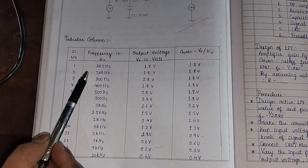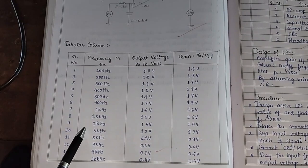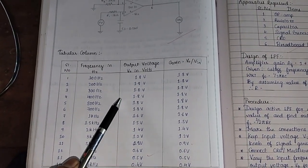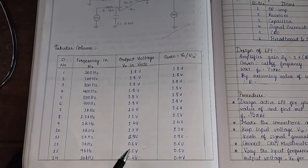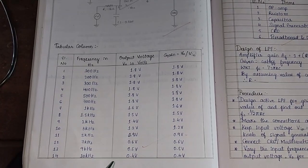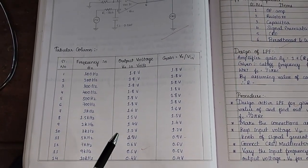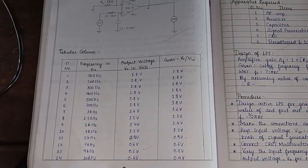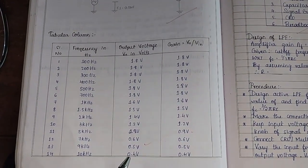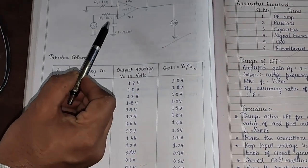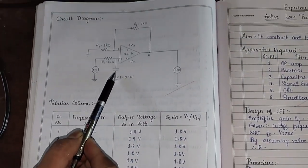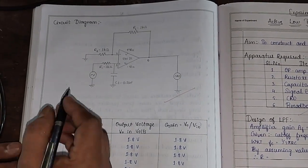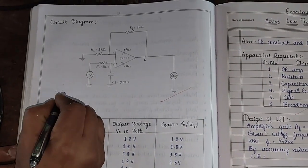By observing these readings we can see that the output voltage goes on reducing. Once we reach the cutoff frequency, the output voltage is almost near to zero volts. This is because we have designed this low pass filter for 1.65 kilohertz.